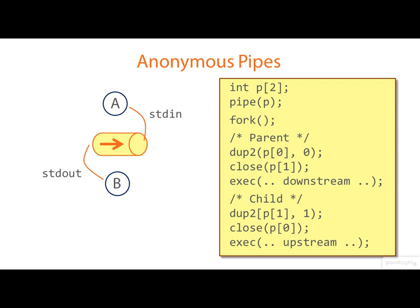And then it execs whatever it wants the upstream program to be. Now one rather non-obvious point is that it's important to close the descriptors that you don't need, particularly the descriptors on the upstream end of the pipe.